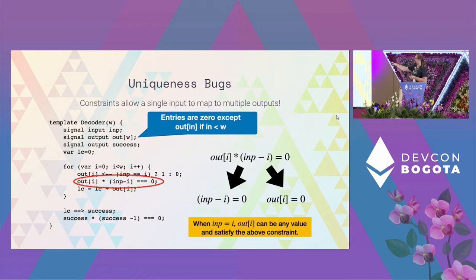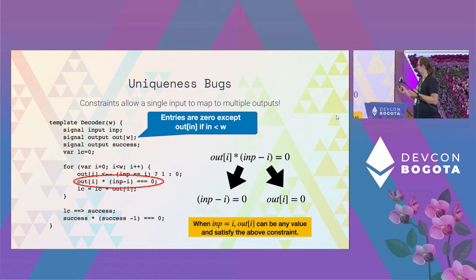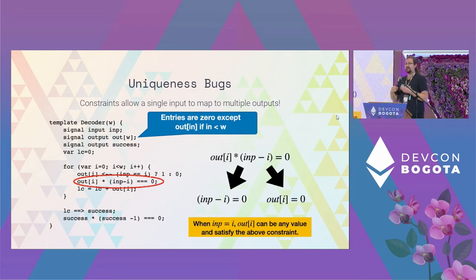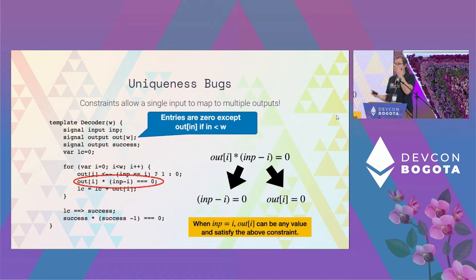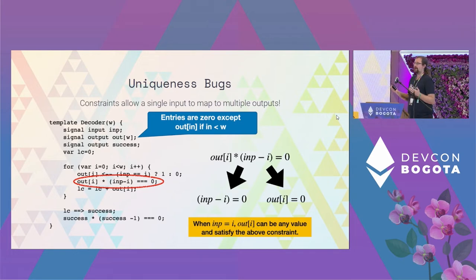Looking at this Circom program, there's a bug circled in red. It constrains all of the outputs except for one very specific output. The decoder is supposed to simply zero out all of the bits except for a single bit specified by 'imp'. The constraint specifies that a multiplication has to be equal to zero — there are two ways it could be zero: the output is equal to zero, or 'imp minus i' is equal to zero. All cases where imp and i are not equal are constrained, but in the case where imp equals i, we find an unconstrained bit. This means an attacker gets to decide the value of 'out at imp' — it could be the desired value of one, or it could be zero.